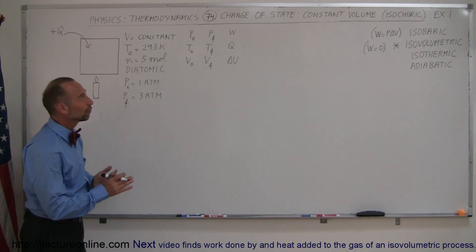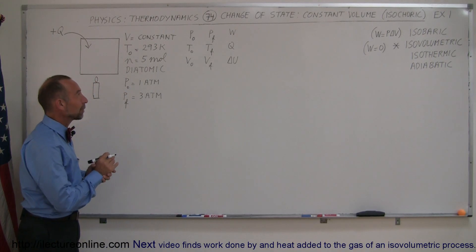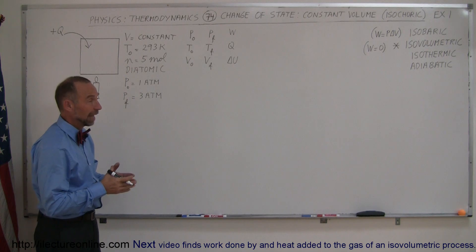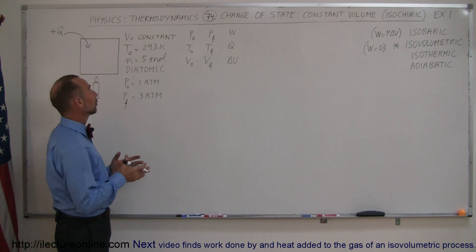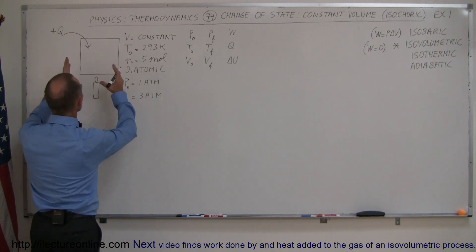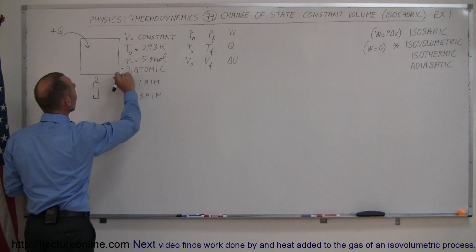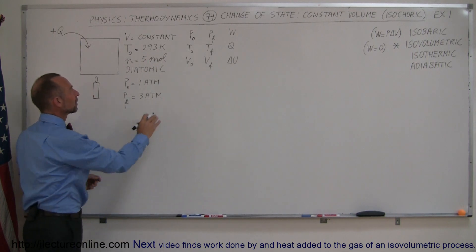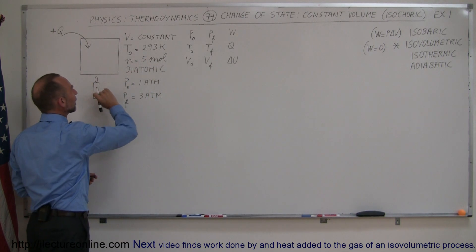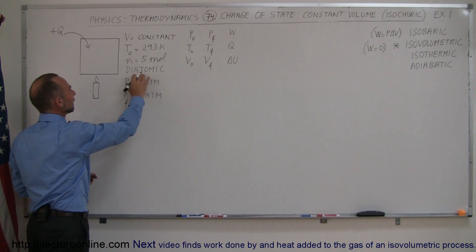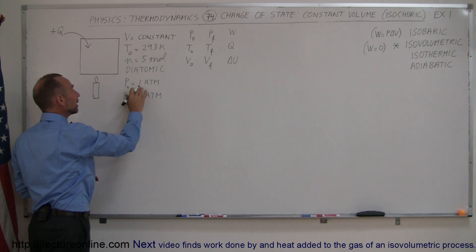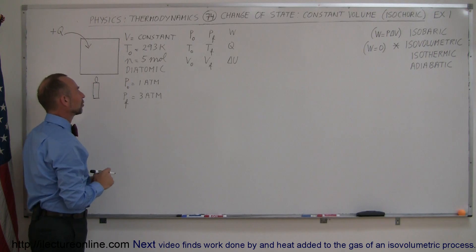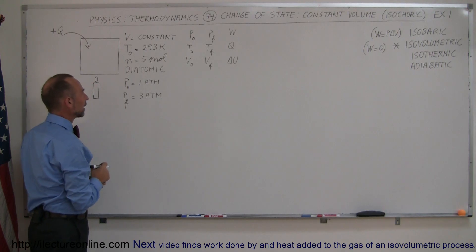Our first example of a thermodynamic process where volume stays constant — an isovolumetric process — starts with a gas in a container. The volume is constant, the initial temperature is 293 Kelvin, there are 5 moles of a diatomic gas in the container, the initial pressure is 1 atmosphere, and the final pressure is 3 atmospheres.